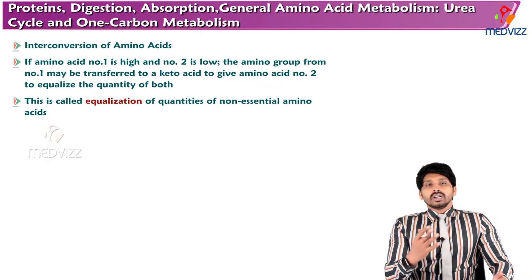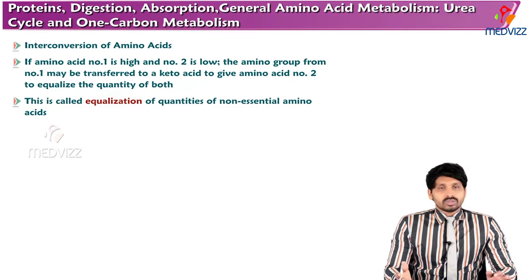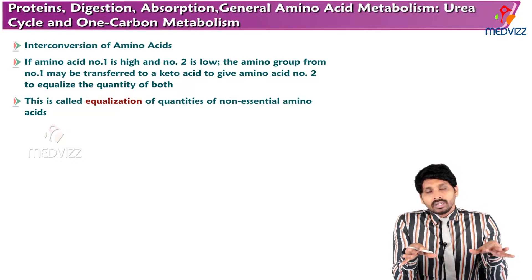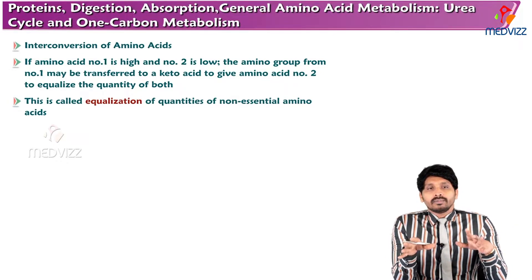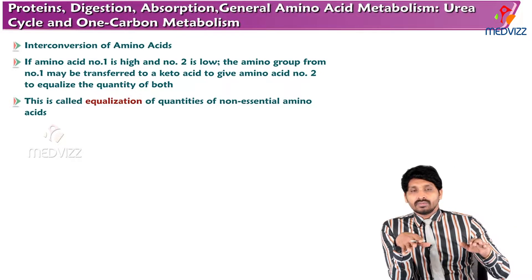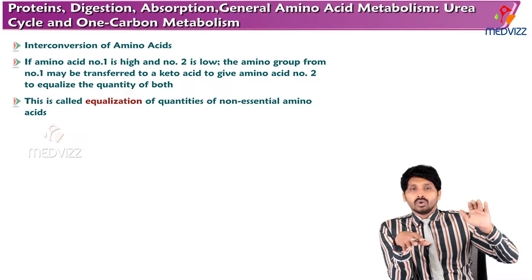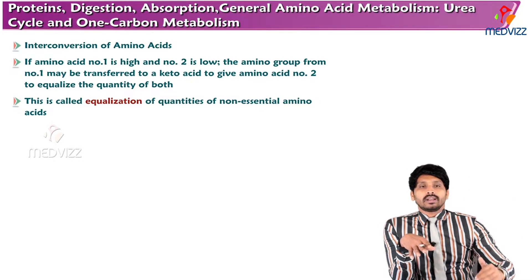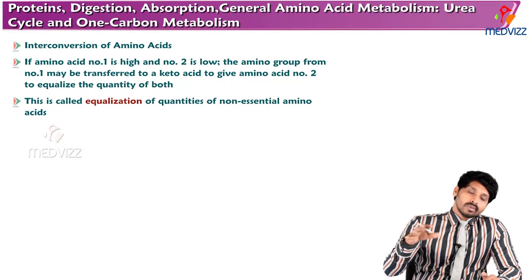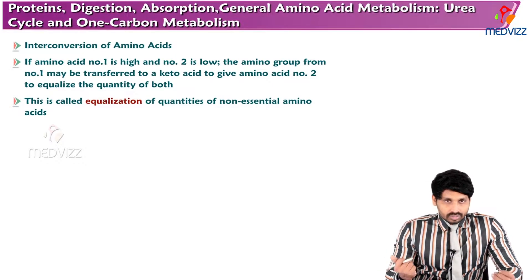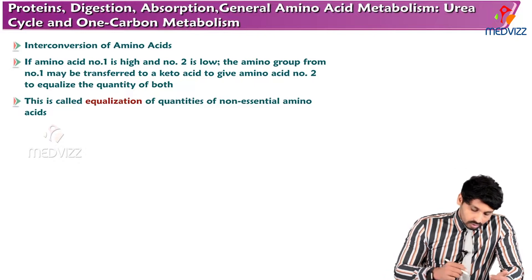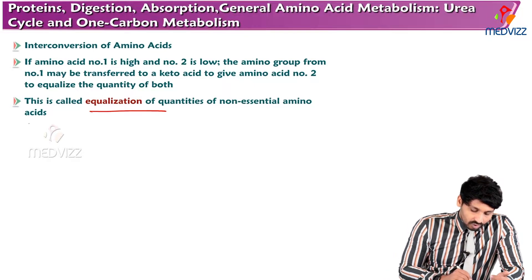For interconversion of amino acids, all 20 amino acids should be present in equal amounts. If one amino acid concentration is high and another is low, transamination reactions are utilized to raise the concentration of the low amino acid to a higher level, equalizing the quantities of both. This process is called equalization of quantities of non-essential amino acids.